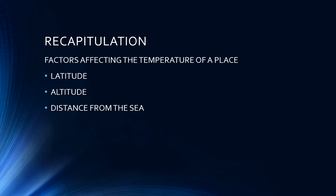The second factor we studied about was altitude — higher the altitude, lower the temperature. And the third factor was distance from the sea. Places close to the sea have a moderate or maritime type of climate because of the moderating influence of the land and sea breeze, whereas places far away from the sea have a continental type of climate, because they are far away from the moderating influence of the sea.